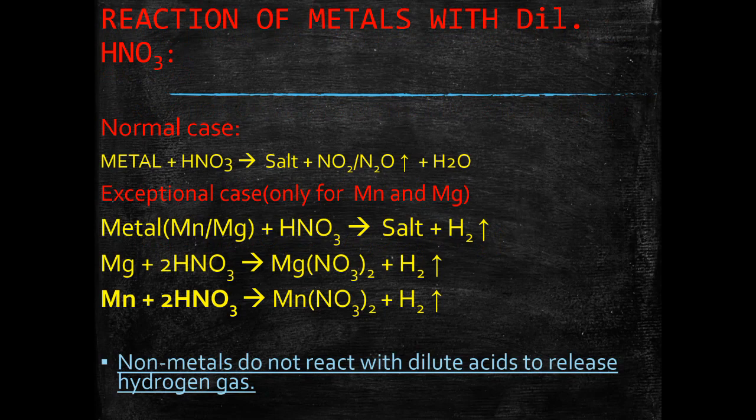As soon as hydrogen gas is formed in the reaction between a metal and dilute nitric acid, the nitric acid oxidizes this hydrogen to water and itself gets reduced to NO2, NO, or N2O.